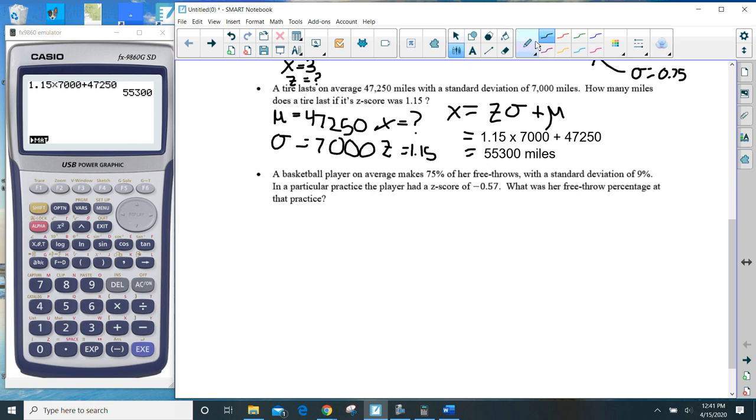Last but not least is this last one down here. It says a basketball player makes, on average, 75% of her free throws, standard deviation of 9%. Particular player's Z score happens to be negative, so this will be below the average, negative 0.57. What was the free throw percentage on that particular day?